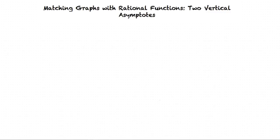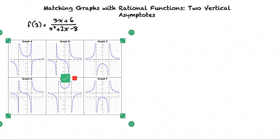This video will cover matching graphs with rational functions to vertical asymptotes. Let's say we are given the function f(x) = (3x + 6)/(x² + 2x - 8), and we have these six graphs. We want to match this function with the correct graph.